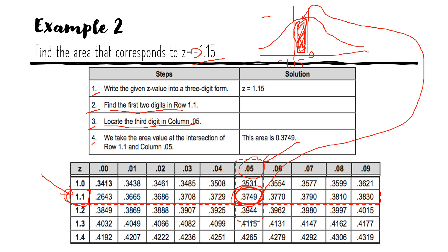Is it the same area from 0 to positive 1.15? Yes, it is. Whatever your area between 0 and negative 1.15 is the same area from 0 to positive 1.15. Please practice: if there is a given population mean or sample mean and you are asked to compute for Z and then look for the area using the Z-table, please practice until you have mastered everything about your Z-table.